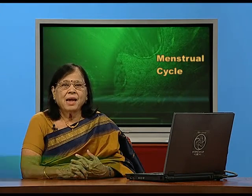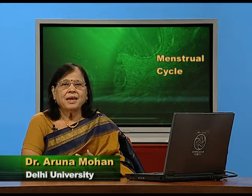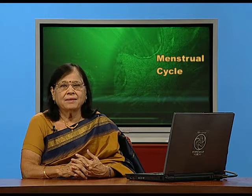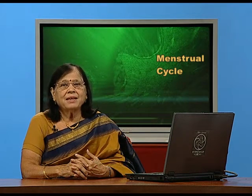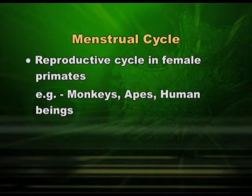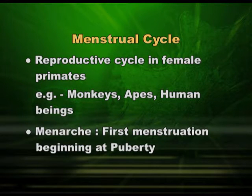I am Dr. Aruna Mohan from Delhi University and today I am discussing certain aspects of the menstrual cycle. The menstrual cycle is a reproductive cycle primarily found in primates like monkeys, apes, and also human females. Menarche is the first bleeding or first menstrual cycle — the initiation of menstruation in a human female.